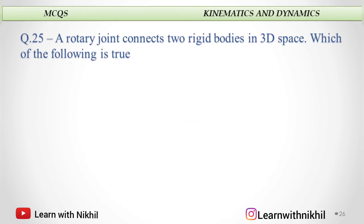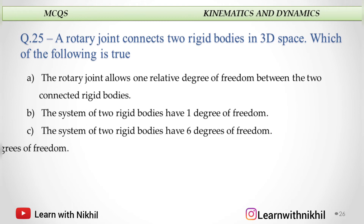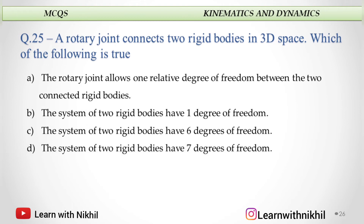A rotary joint connects two rigid bodies in 3D space — which of the following is true? For the rotary joint, a system of two rigid bodies has 7 degrees of freedom. So if two rigid bodies are attached, they should have 7 degrees of freedom.